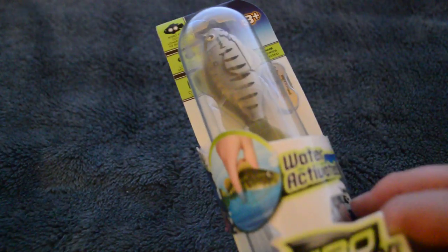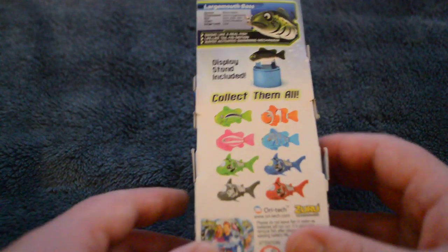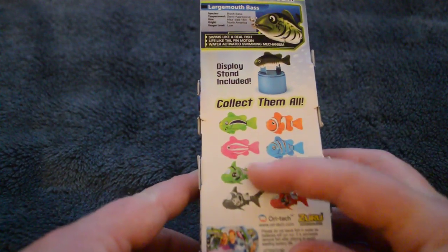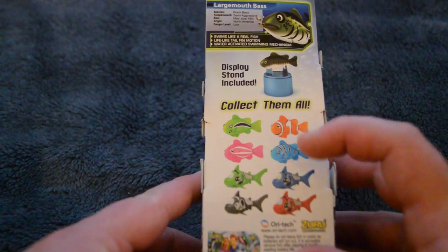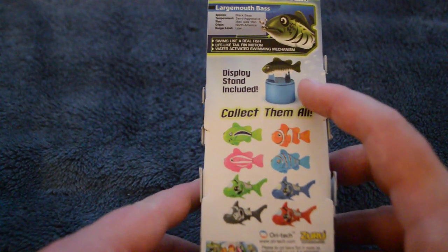Nice packaging, you've got a clear view of the fish in here. And on the back it shows you some of the other ones. I was hoping to get the little blue shark, but these bottom four they never had. They only had the top ones and the largemouth bass.